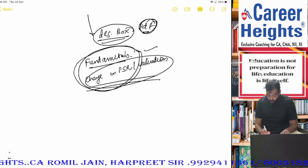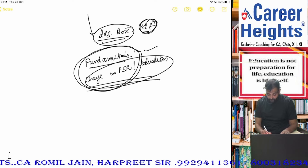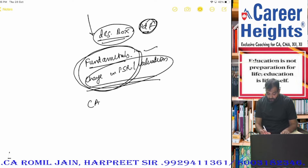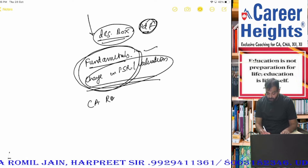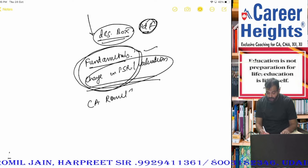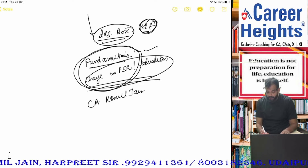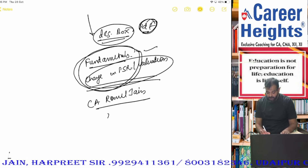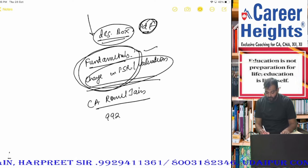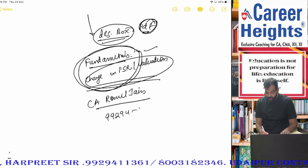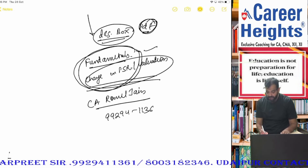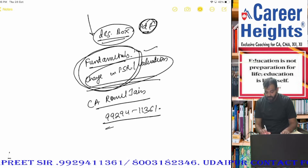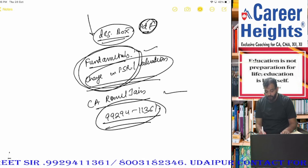Aur agar aapko doubt ho, toh feel free to WhatsApp. Mera naam CA Romil Jain hai from Udaipur, and my contact number is 99294-11361. Thank you all of you, best of luck!